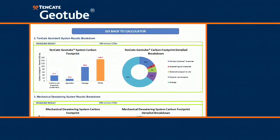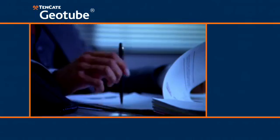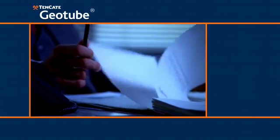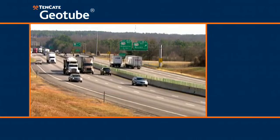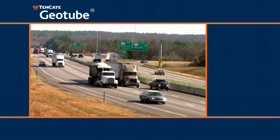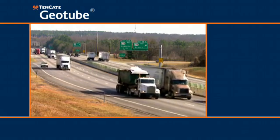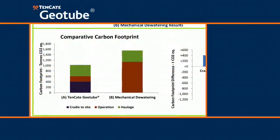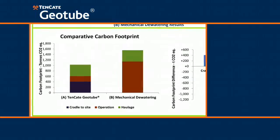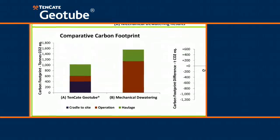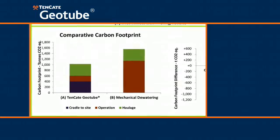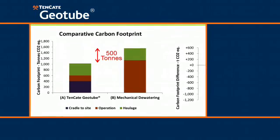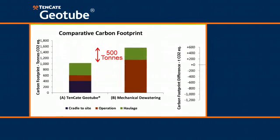These calculations are specific to the project. The carbon footprint comparison is determined by using database information on the impact of transport distances, energy consumption, and other relevant factors. In this example of the carbon footprint comparison for a dewatering project, the use of Tenkata Geotube systems has lowered the carbon footprint by over 500 tons when compared to a mechanical dewatering device.